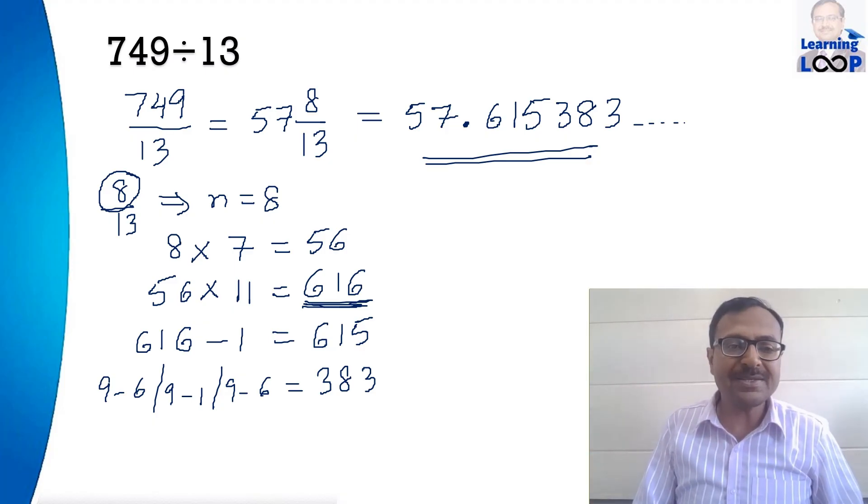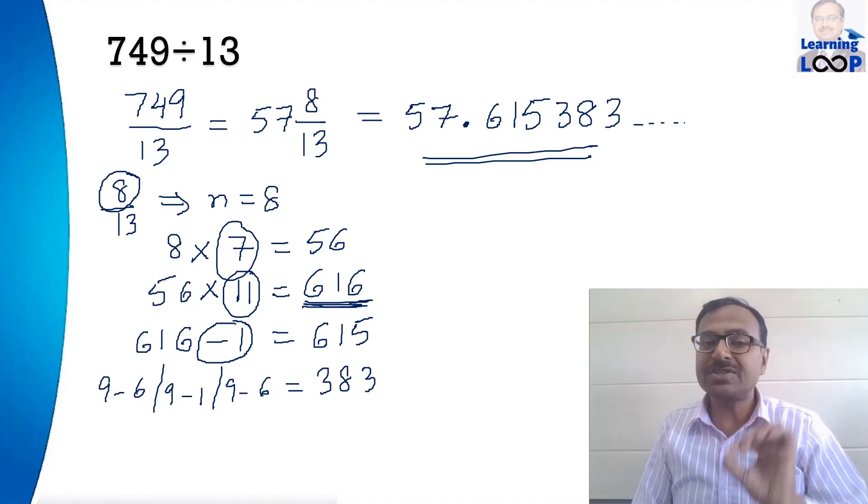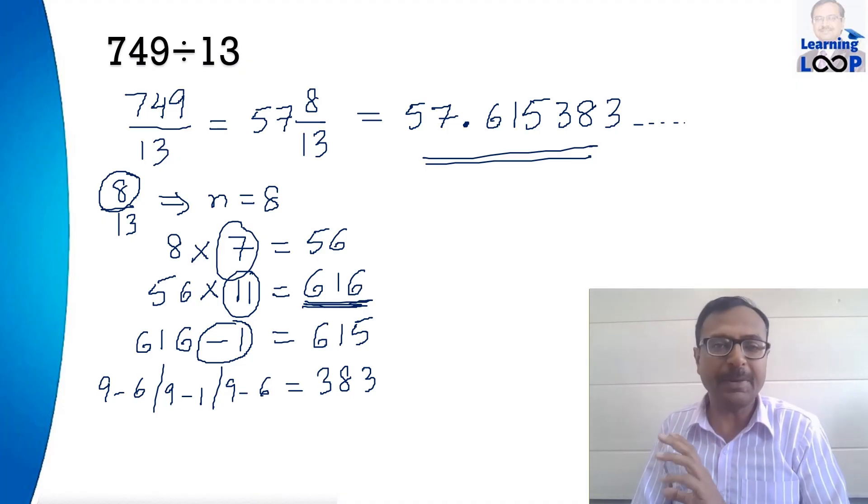Remember this 7 and this 11 and then subtraction like this you have to subtract 1. They are fixed numbers which you have to use in all examples in which you are dividing by 13.